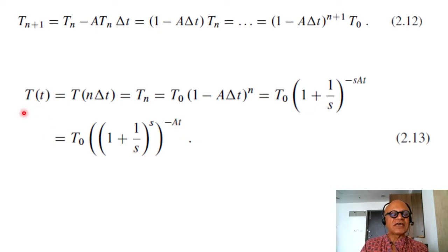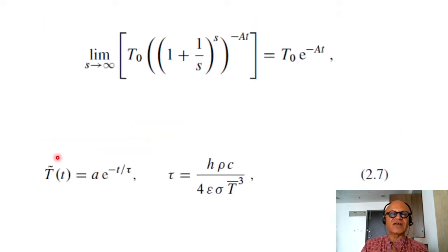So now we have again an exponential expression for temperature evolution in time as a function of the initial temperature and here it's easy to show that as S tends to infinity which means delta T tends to 0 then T_0 times (1 + 1/S)^(-S*A*T) tends towards or becomes T_0 times e^(-A*T) which is what we had derived before.